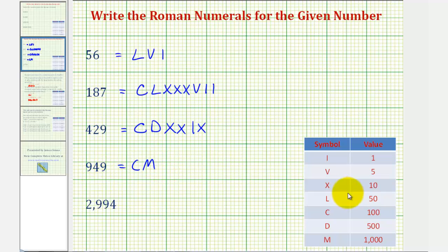And then for 40, we cannot use four x's because we cannot repeat four symbols. So we'll use 10 before 50, or an x before an l.